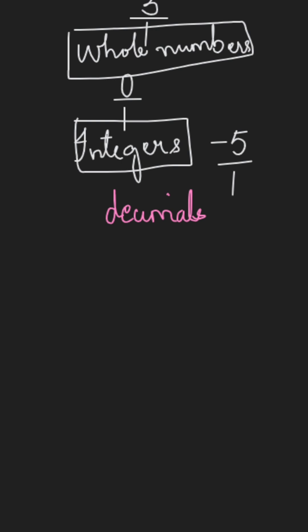The decimals can be of three types. The first one is terminating decimal. The terminating decimals are the decimals which end, which terminate. For example, 0.5.